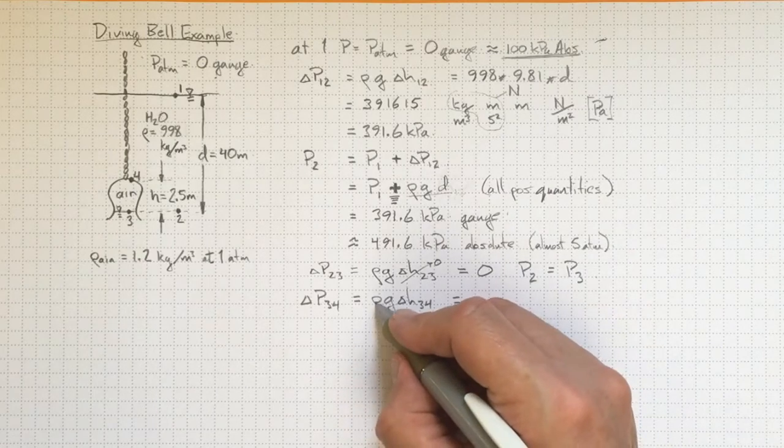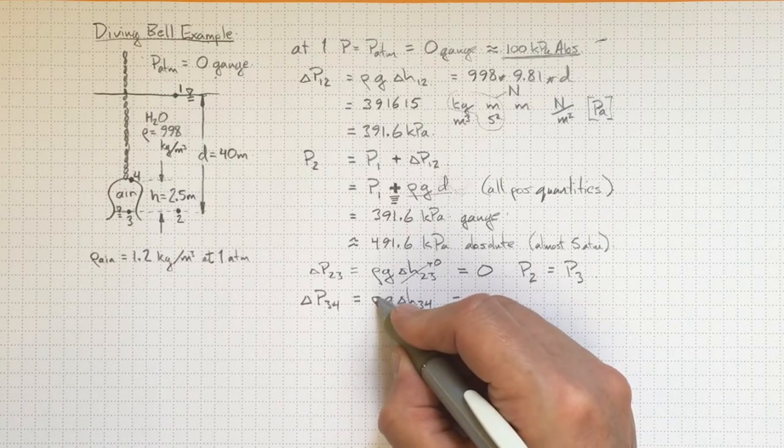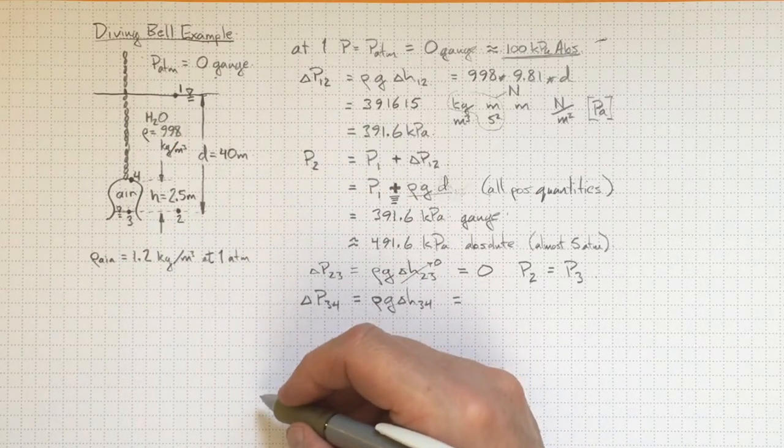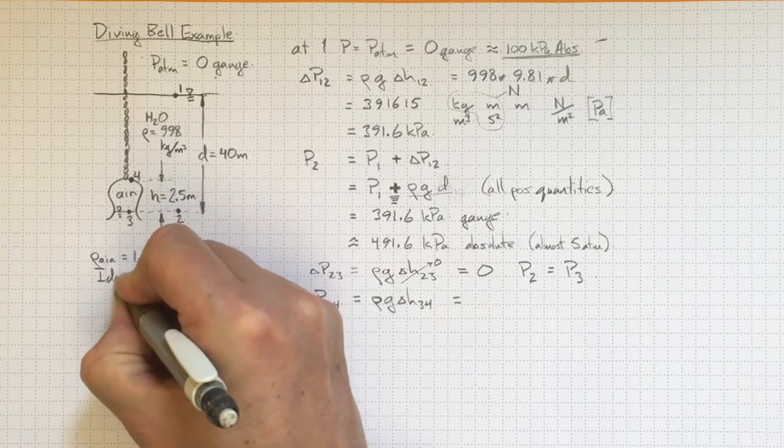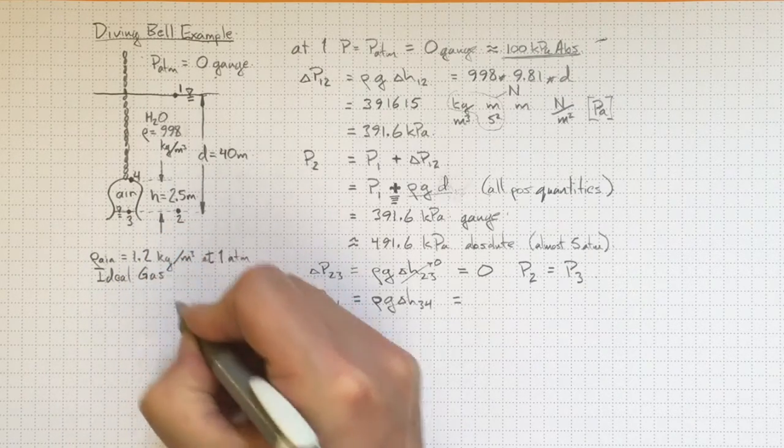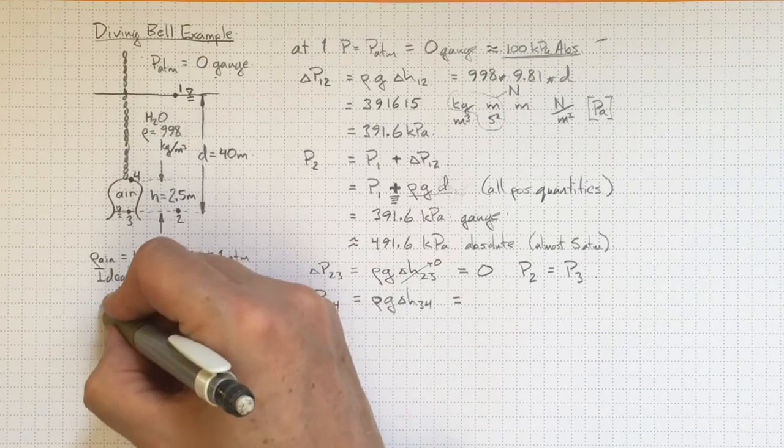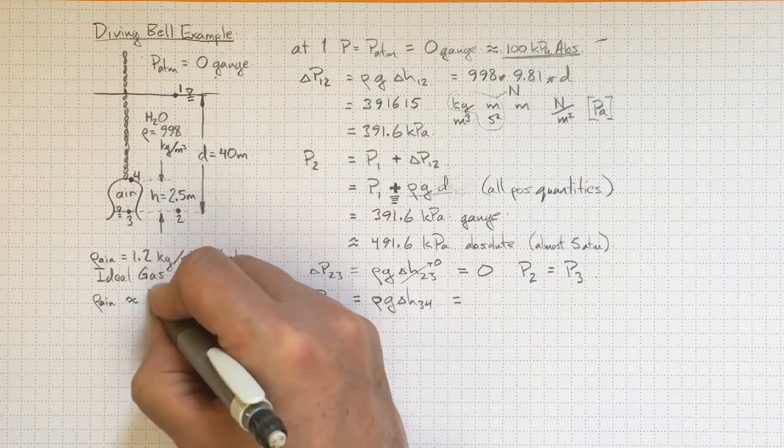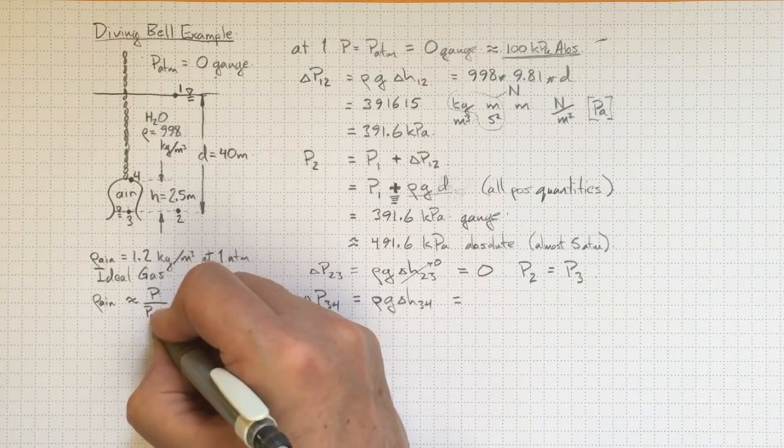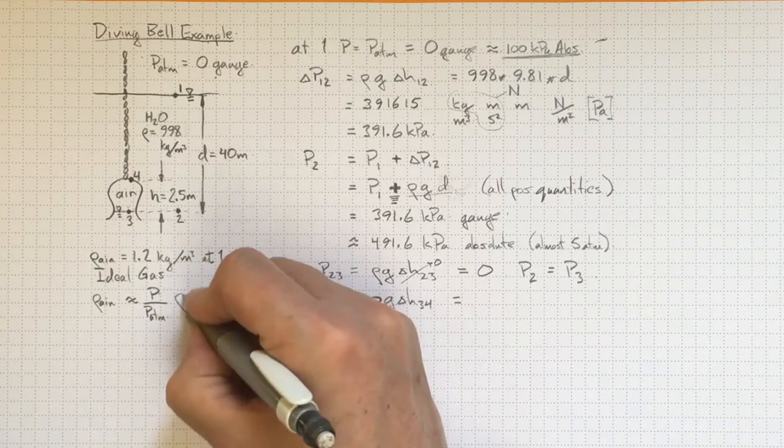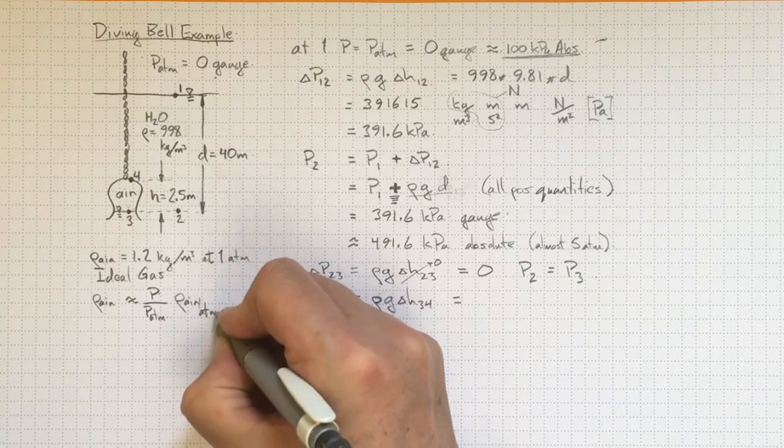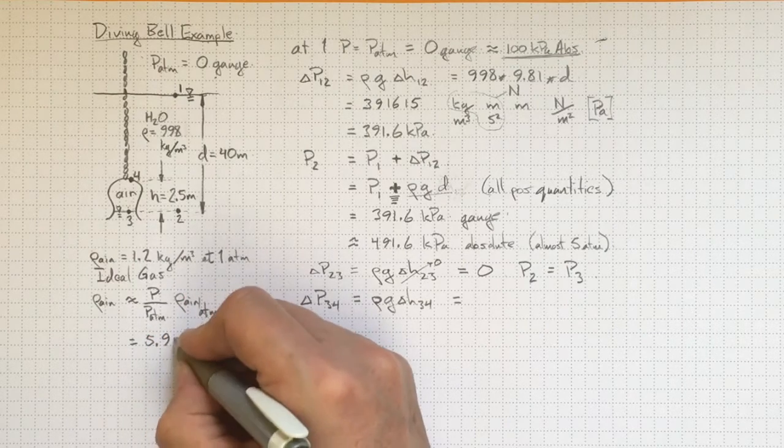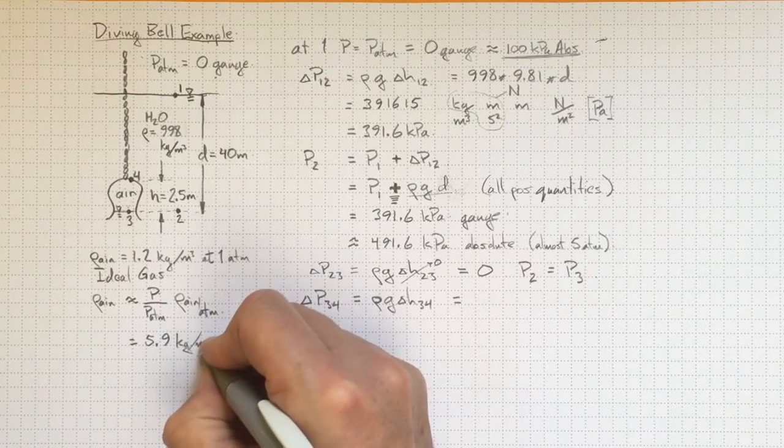That's going to be, well we'll need the density of air here because we're going through a medium of air rather than water. So if we assume that we have an ideal gas for air, which is not a horrible approximation, that pressure is near atmospheric, then the density of air at the higher pressure will be approximately equal to whatever that higher pressure is divided by the atmospheric pressure times the density of air at atmospheric pressure. And that's going to be equal to 5.9 kilograms per cubic meter.